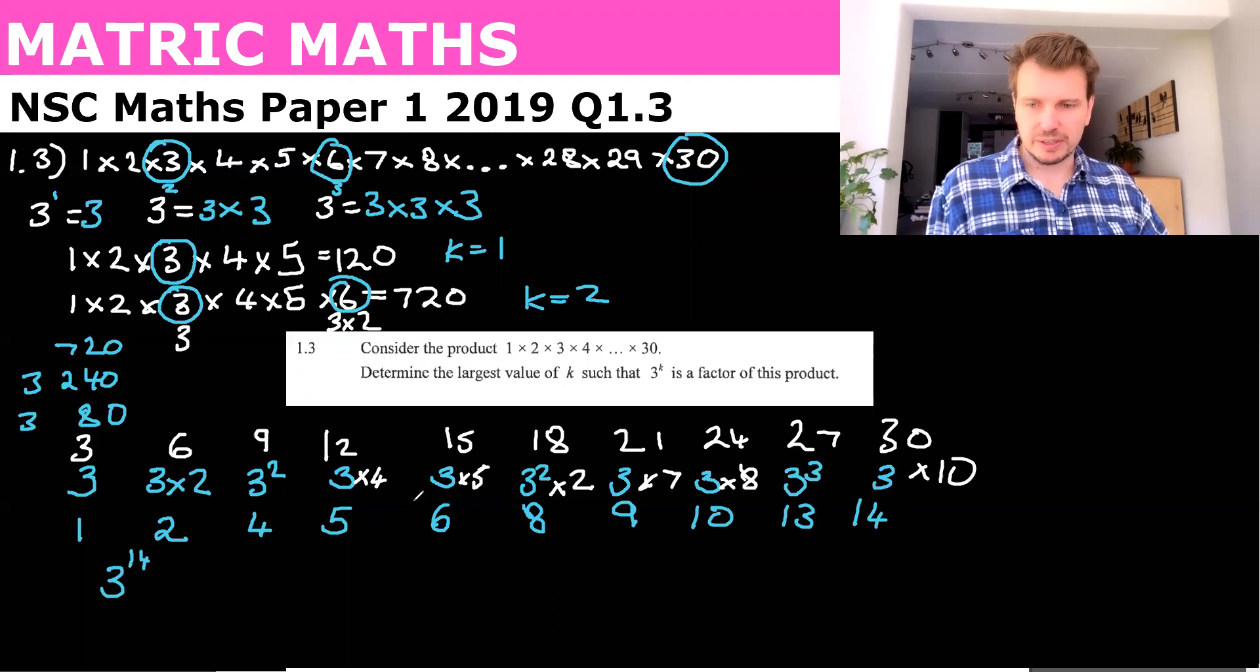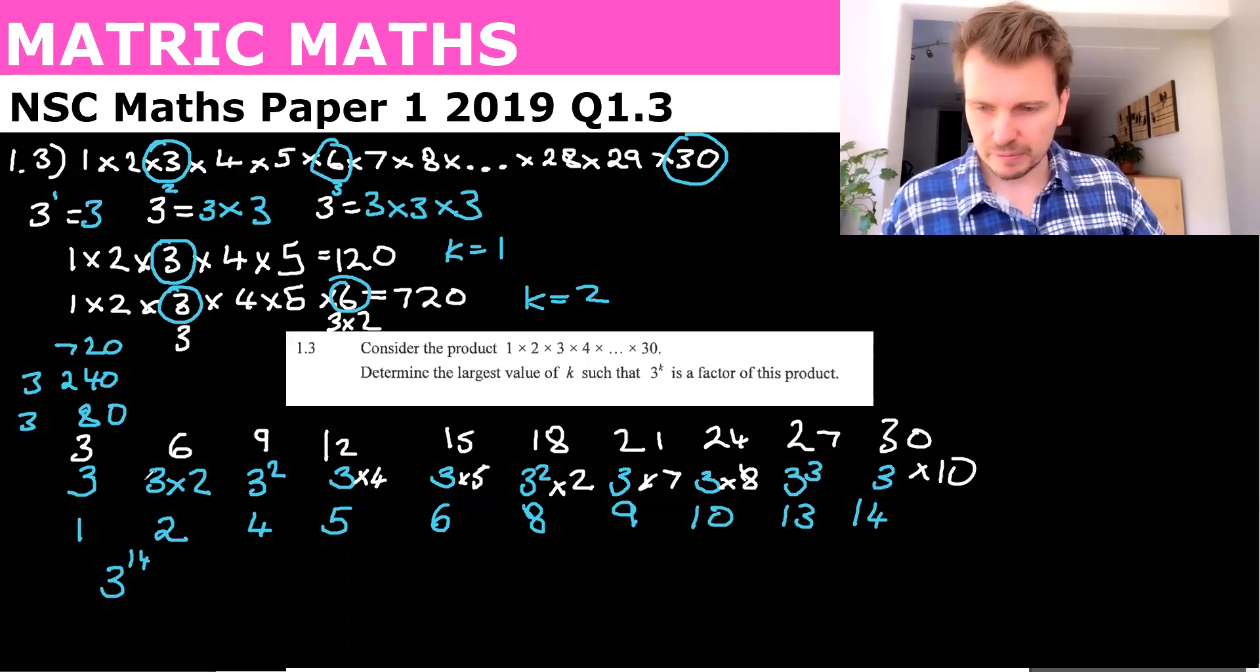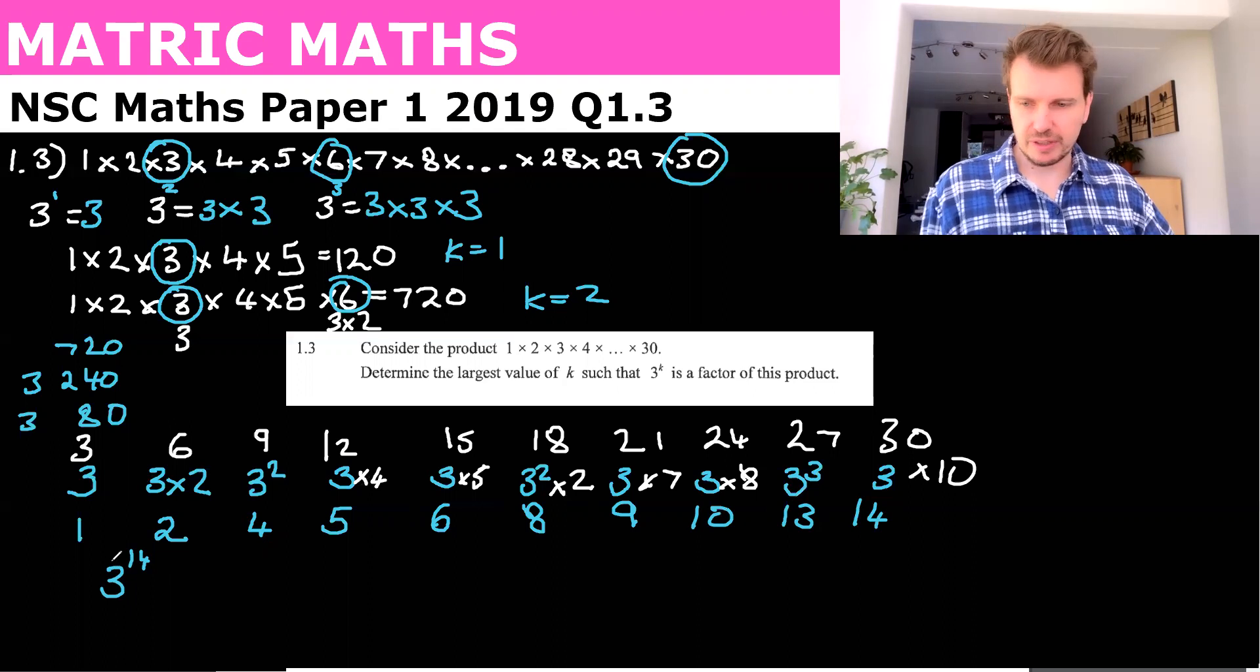So 3 to the power of 14. That's what would be this answer here, if we took all the 3s. And of course, 3 to the k. So 3 to the 14. Therefore k is equal to 14.